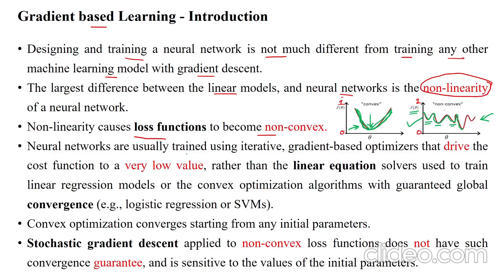Neural networks are usually trained using iterative gradient-based optimizers. These optimizers drive the cost function towards a very low value, the converging point.